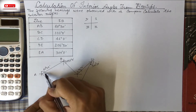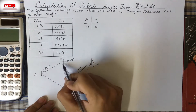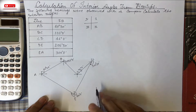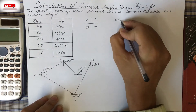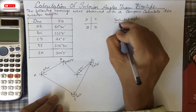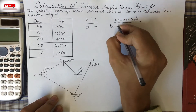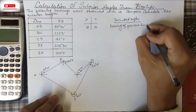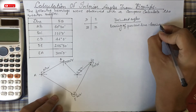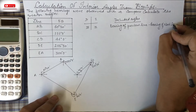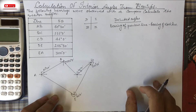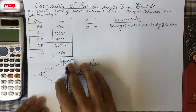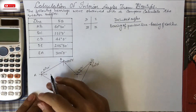Now we have to find the interior angles: angle A, angle B, angle C, angle D, and angle E — each is the internal angle of the traverse at that vertex. For included angles, there is a simple formula: included angle = bearing of previous line minus bearing of next line. Let's first solve by reading the figure, then apply the formula.